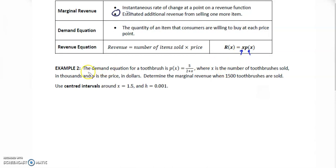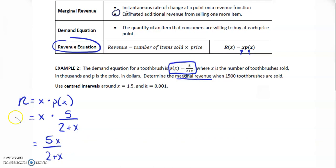Example 2: The demand equation for a toothbrush is p of x equals 5 over 2 plus x, where x is the number of toothbrushes sold in thousands and p is the price in dollars. Determine the marginal revenue when 1,500 toothbrushes are sold. Marginal revenue is the instantaneous rate of change at a point on the revenue function, so first we need to find the revenue function. Revenue is x times p of x, which is x times 5 over 2 plus x, which equals 5x over 2 plus x. This is our revenue function.